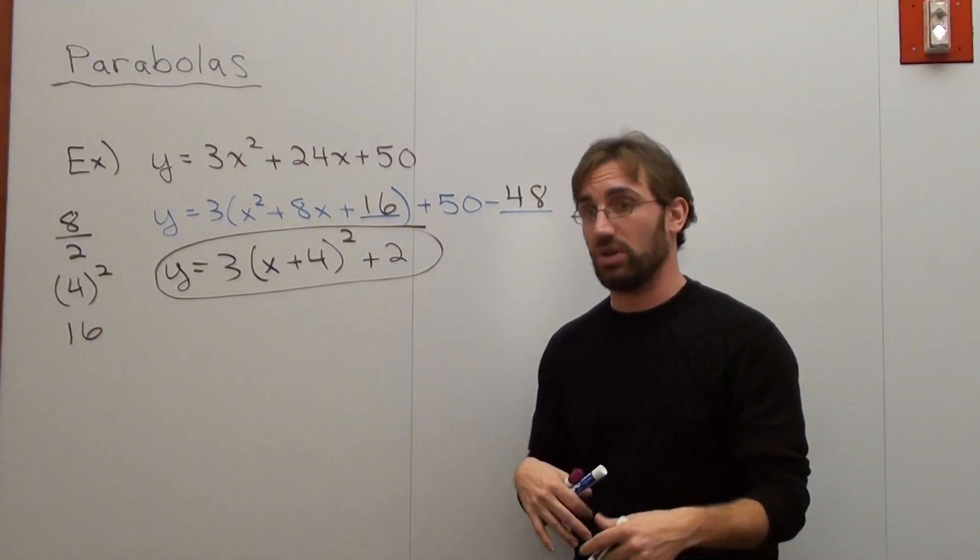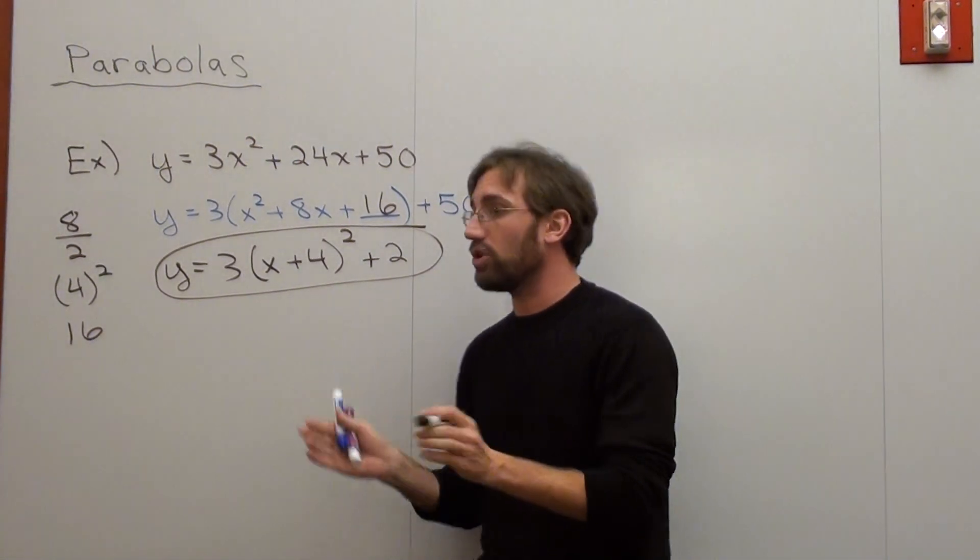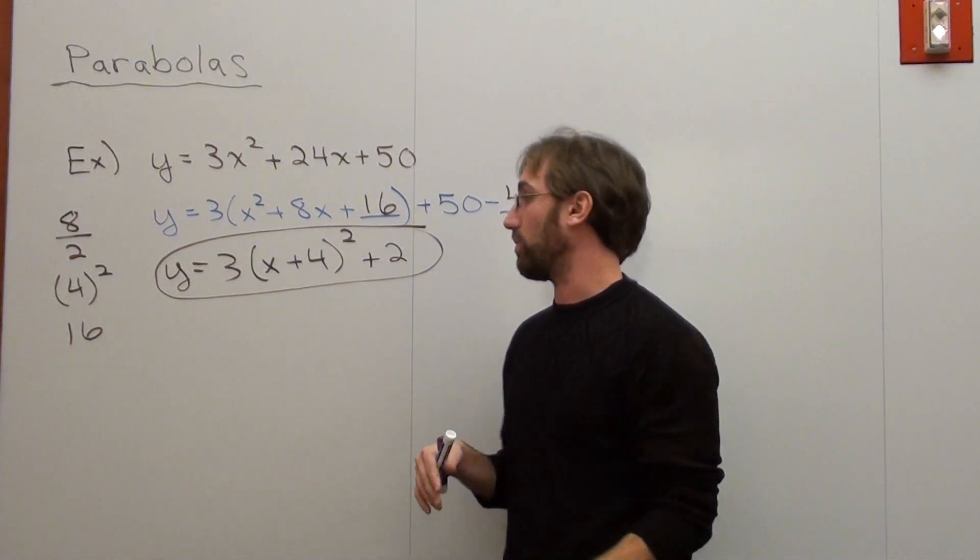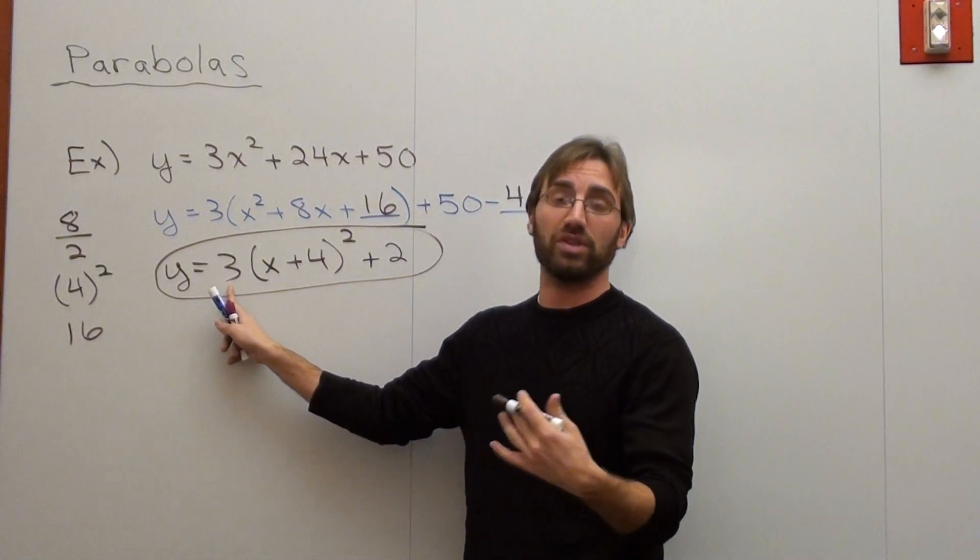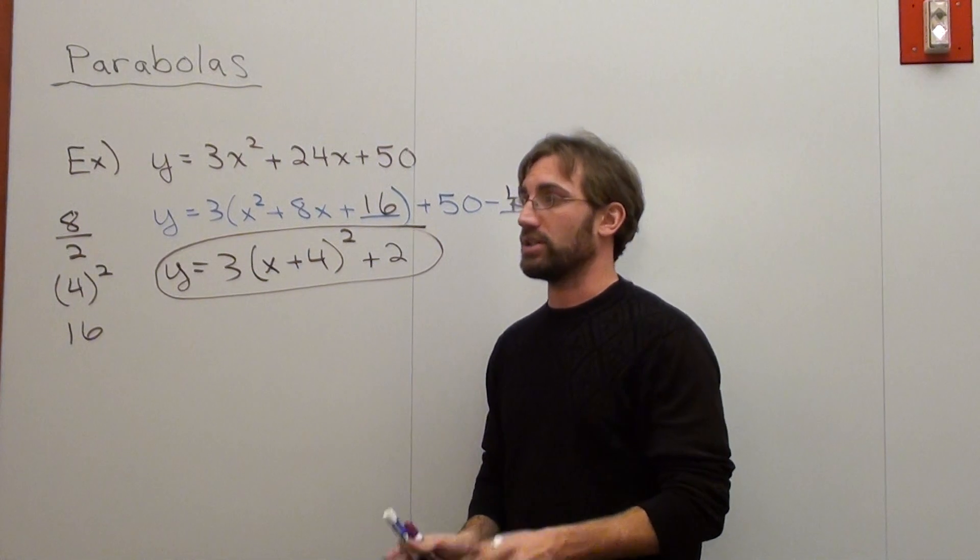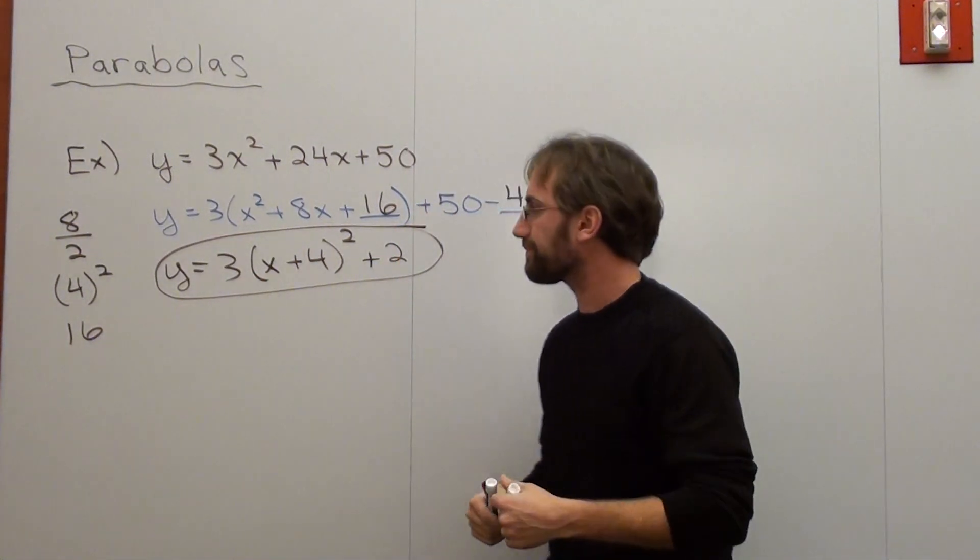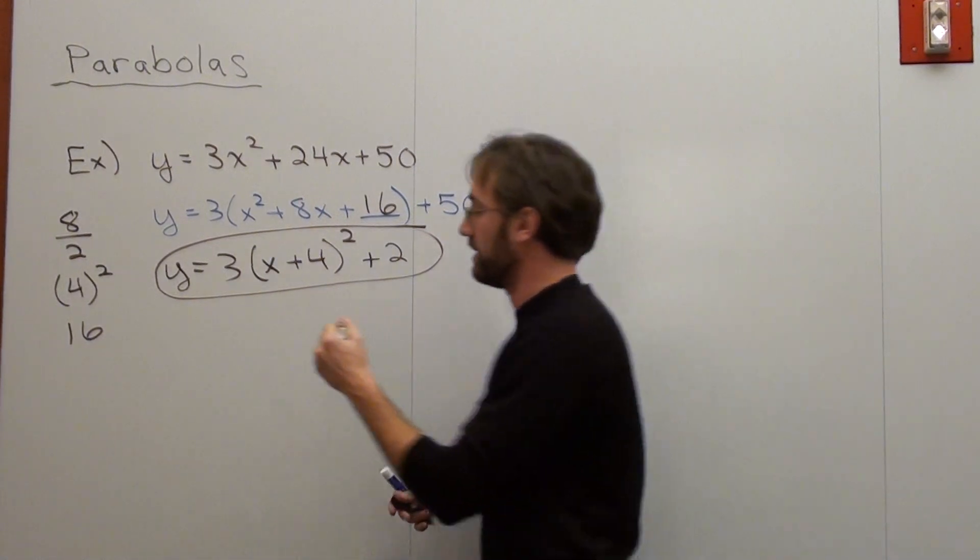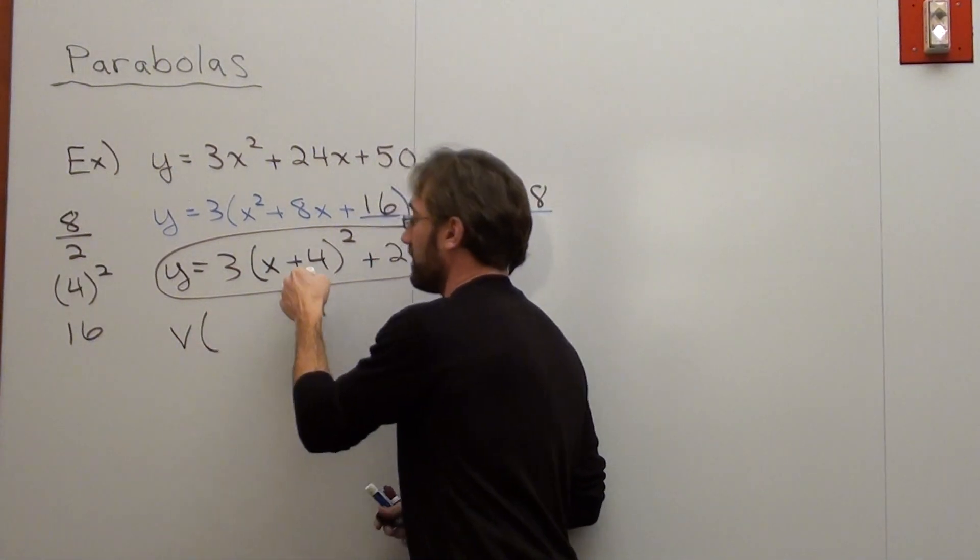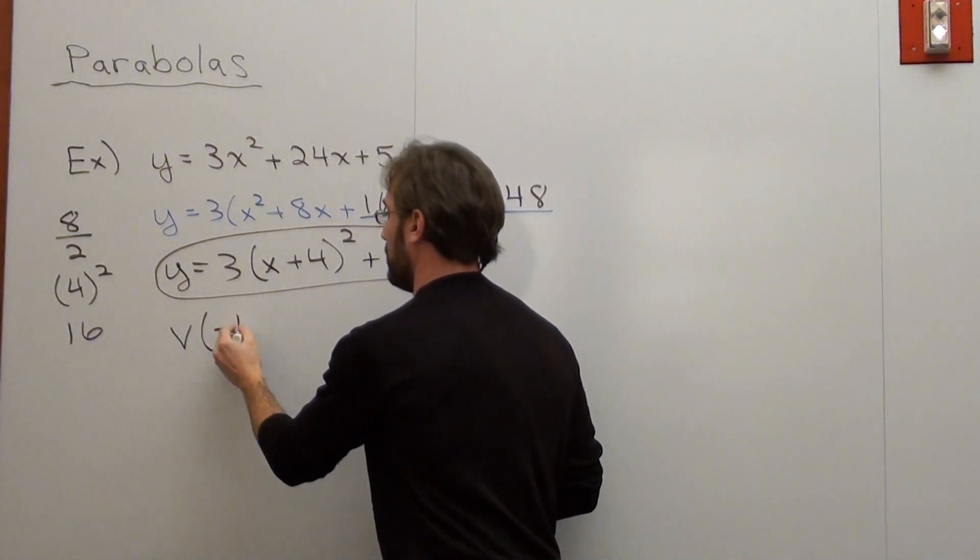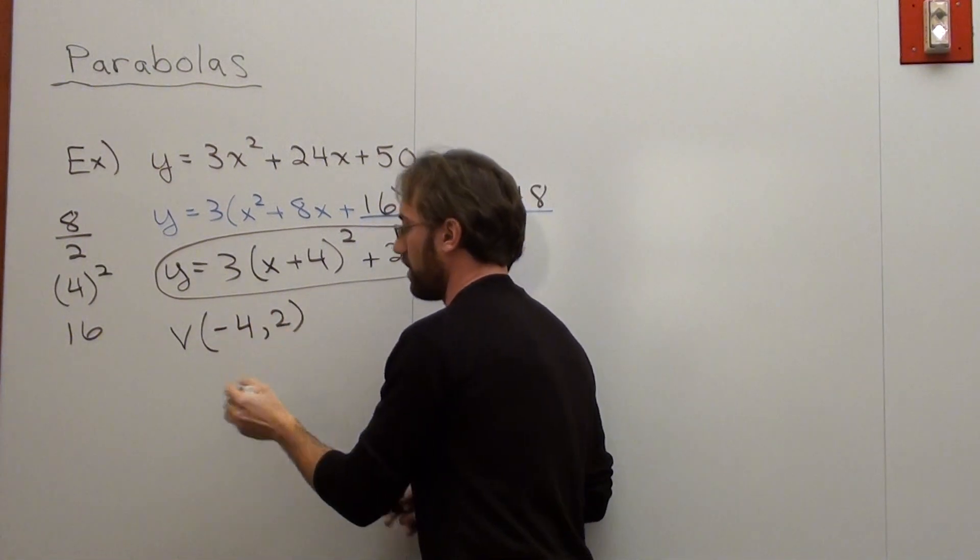Okay. With this, I can kind of figure out what's going on. I know that it's going to open up or down because we're solving for y. And it opens up because the a term, the number in front of the quantity, is positive. It's going to be a sharp opening too, because the number is bigger than 1. So my vertex is going to be the opposite of this value here. So it's negative 4 and 2.